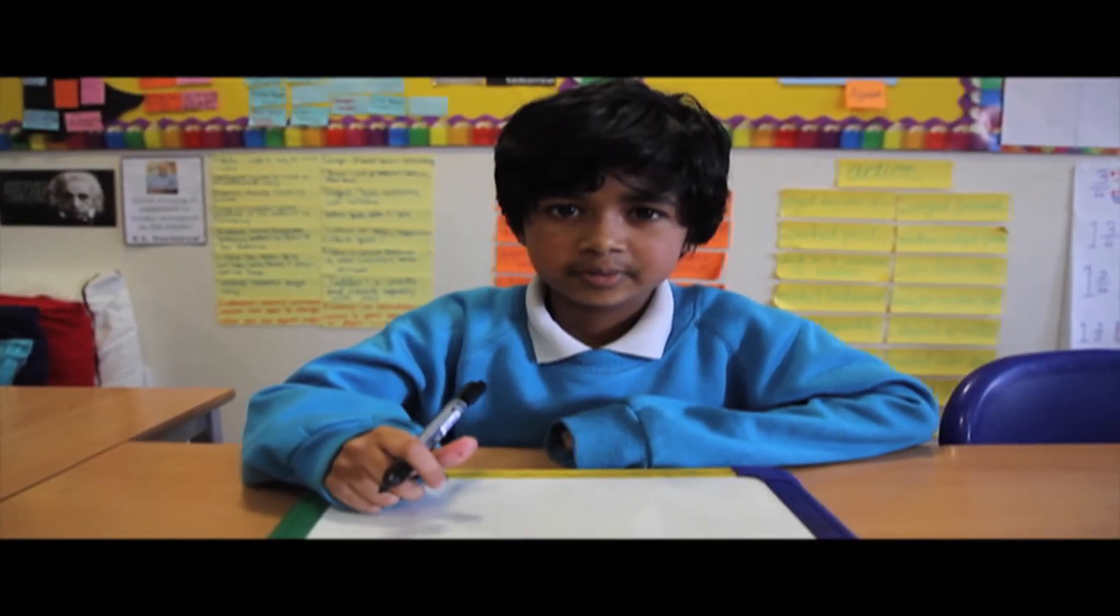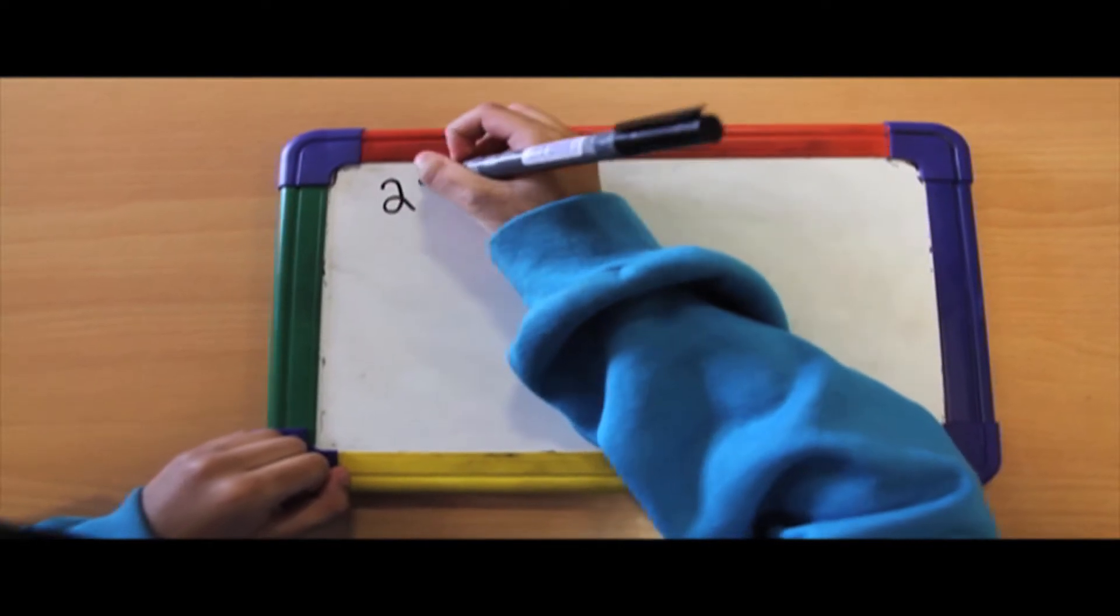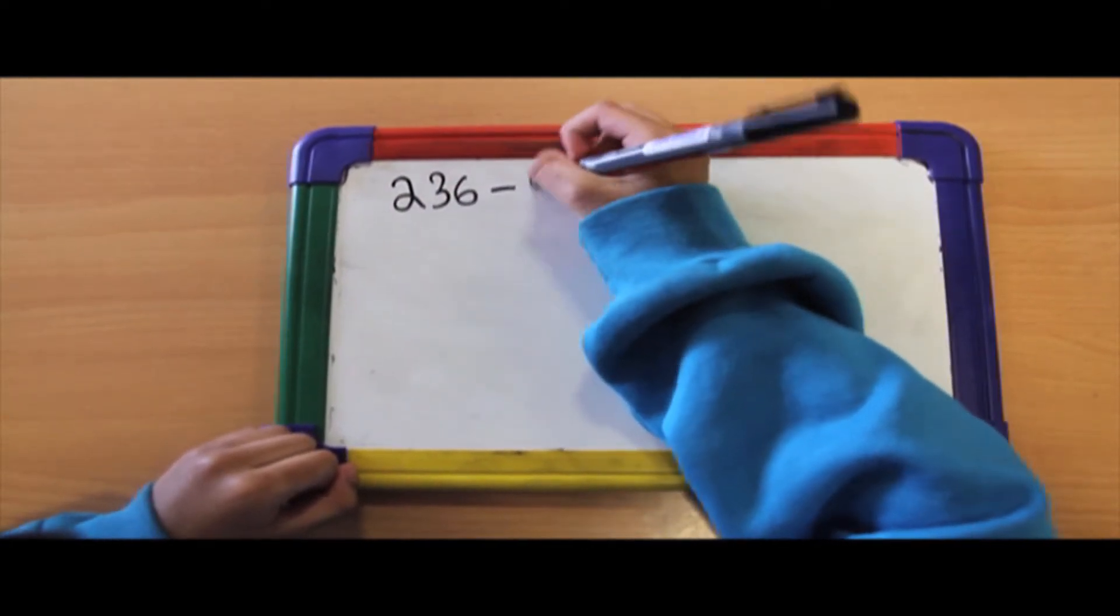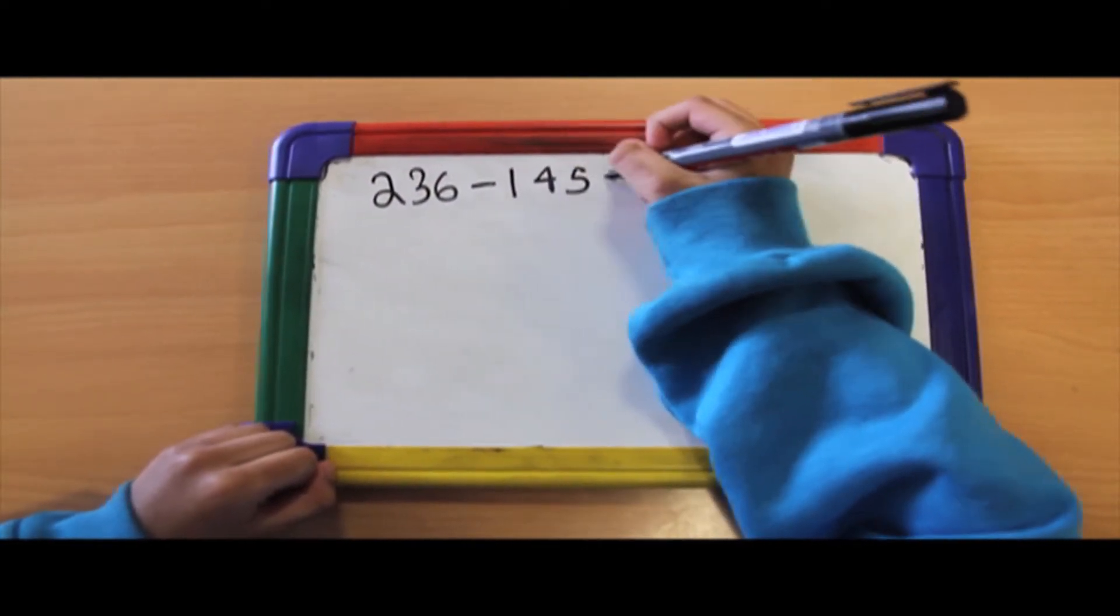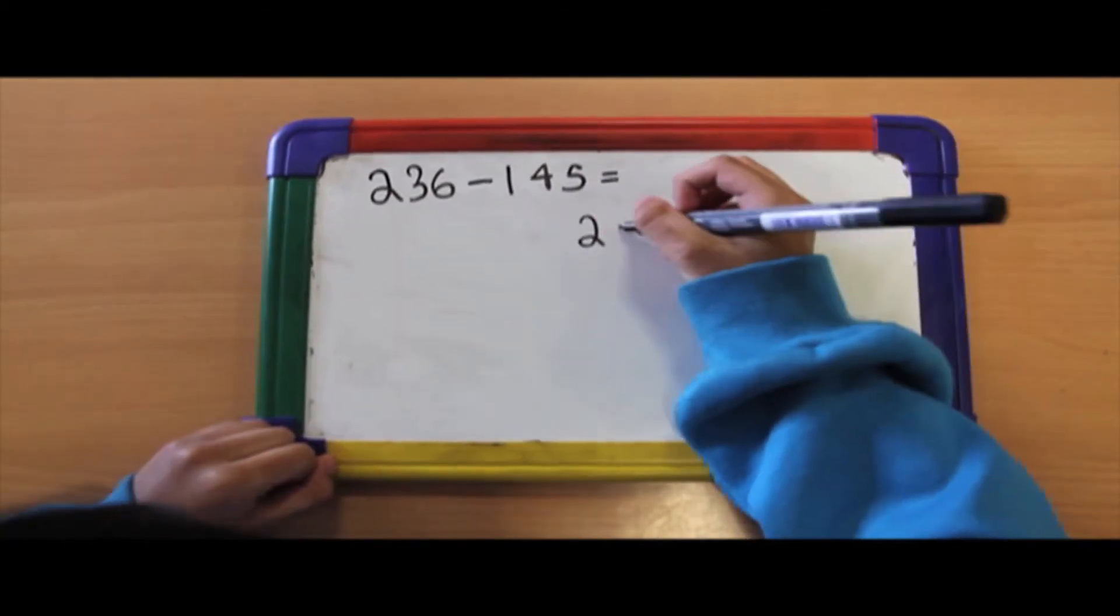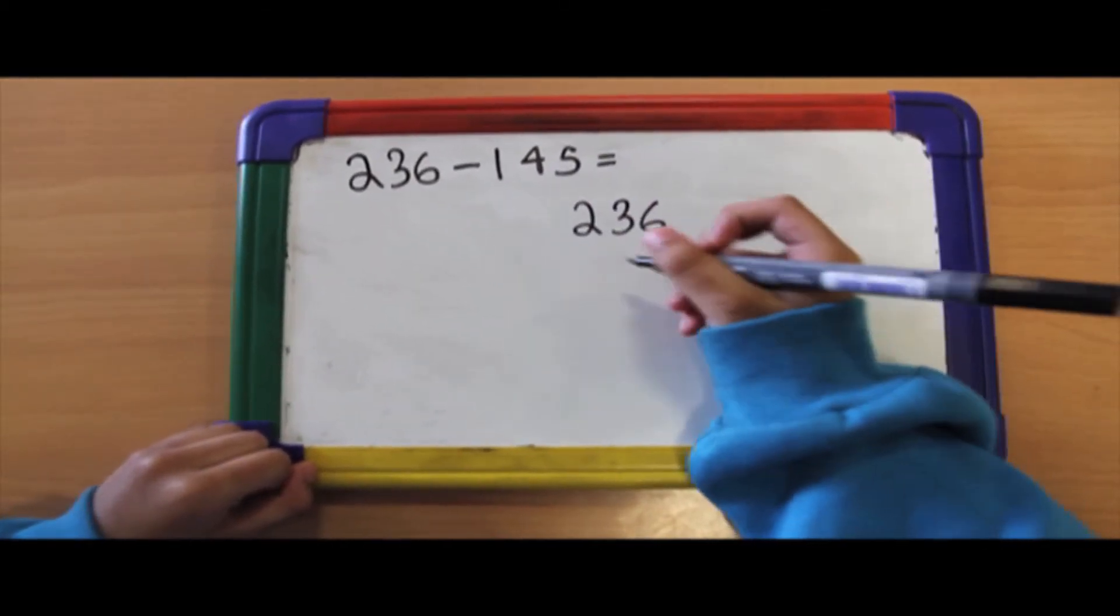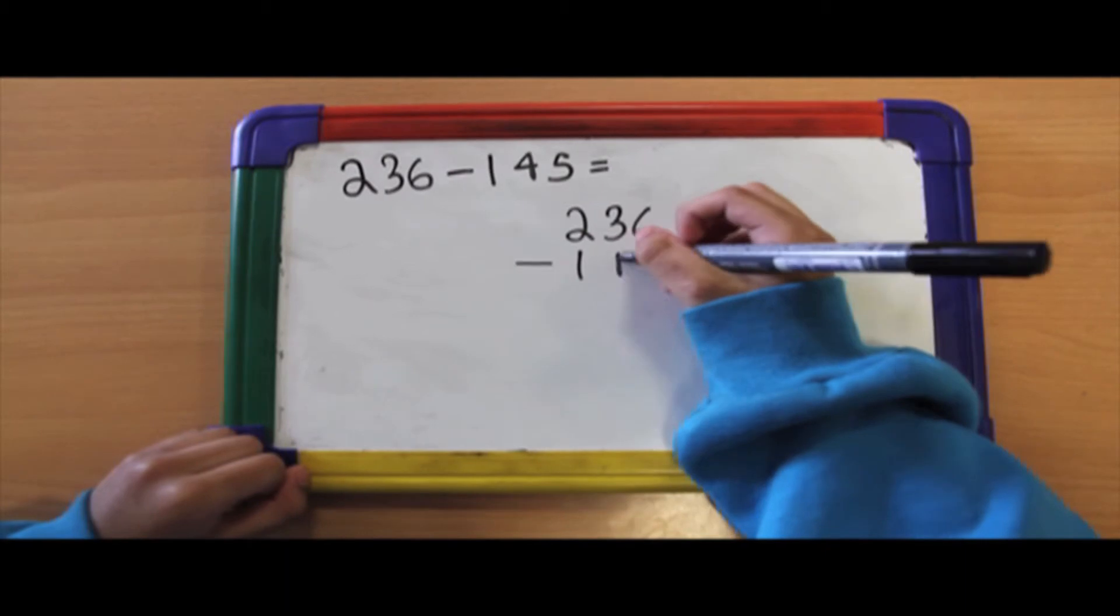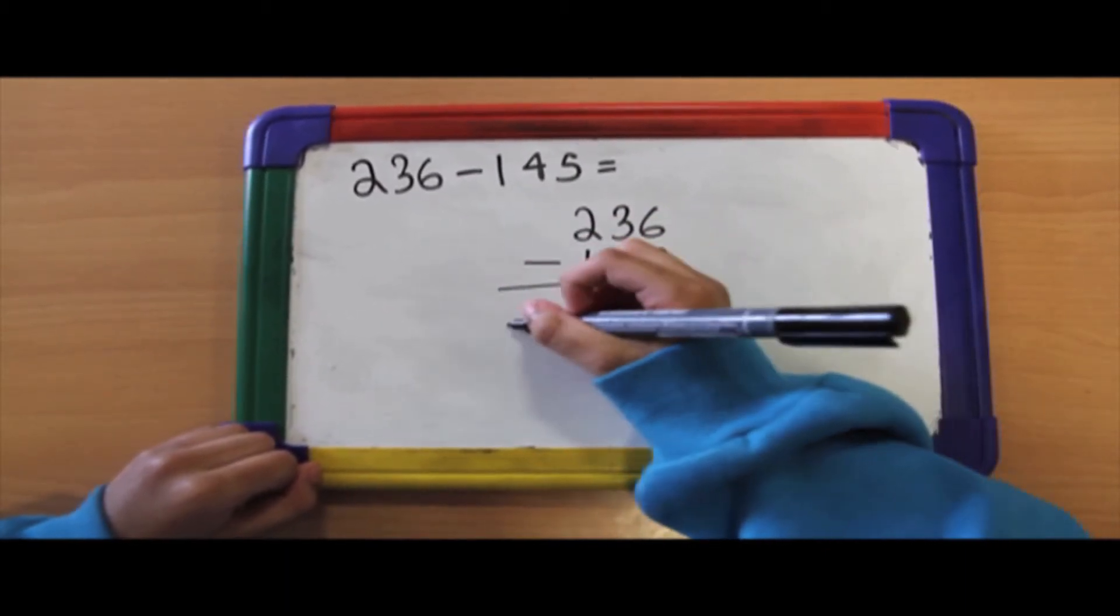I'm going to subtract using the colour method. First I'm going to write 236 take away 145. I'm going to write 236 on the top because it's the biggest number and 145 at the bottom since it's the smallest.